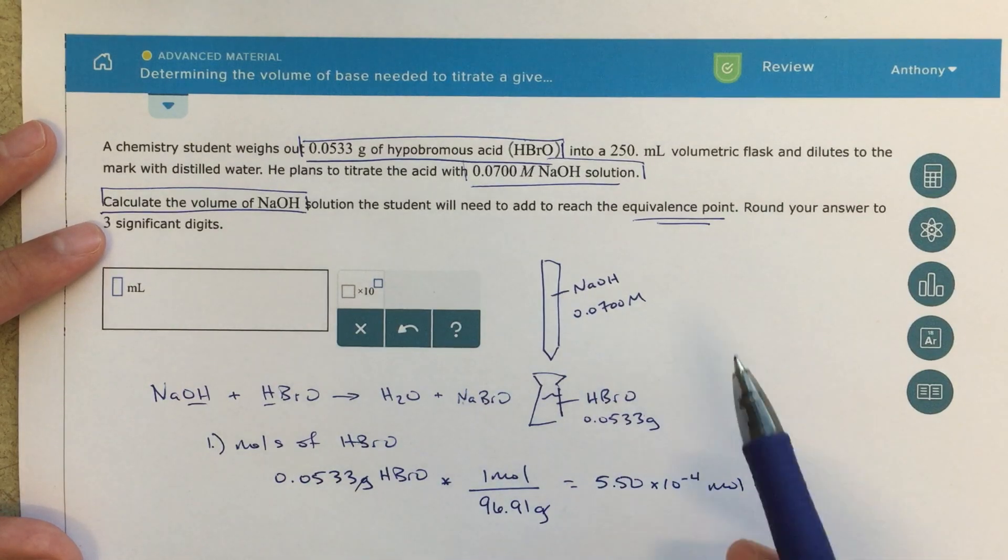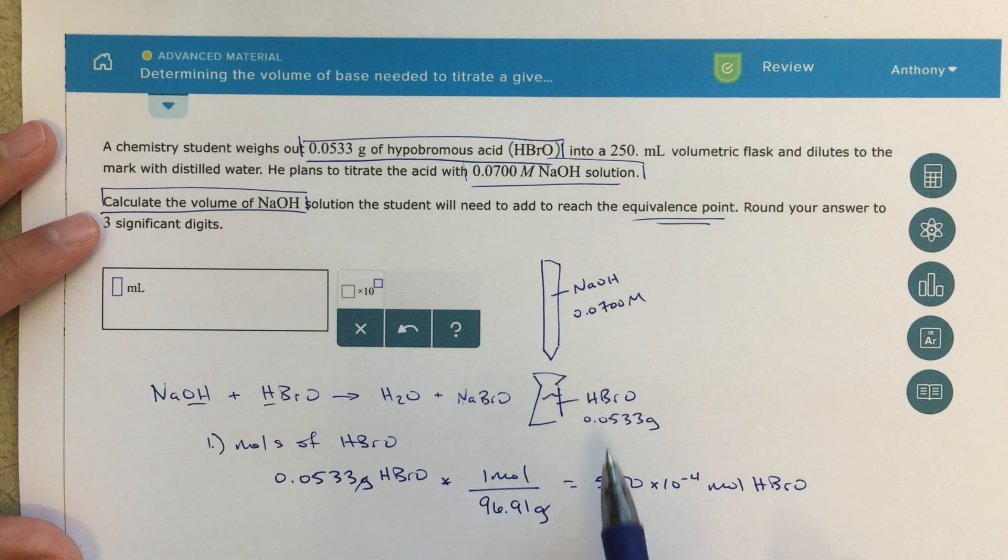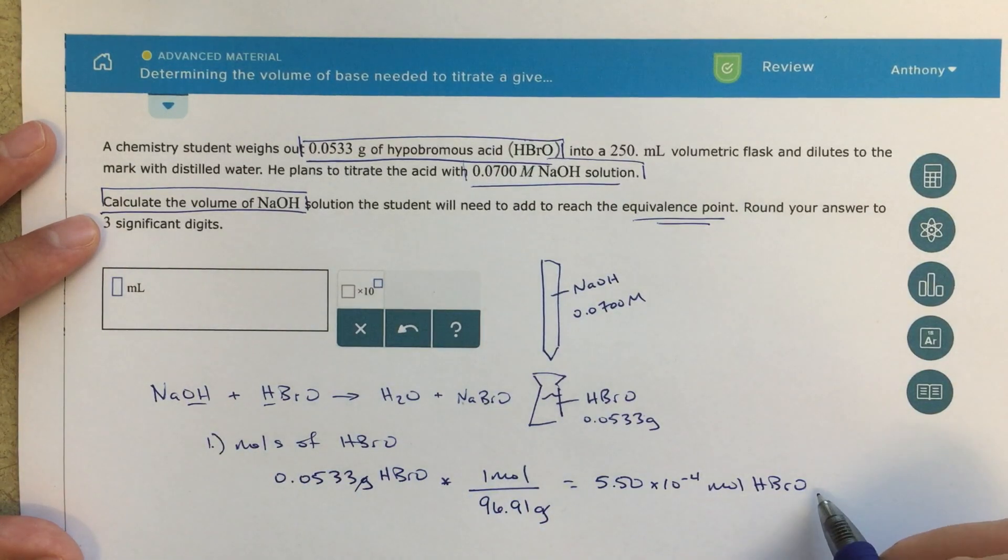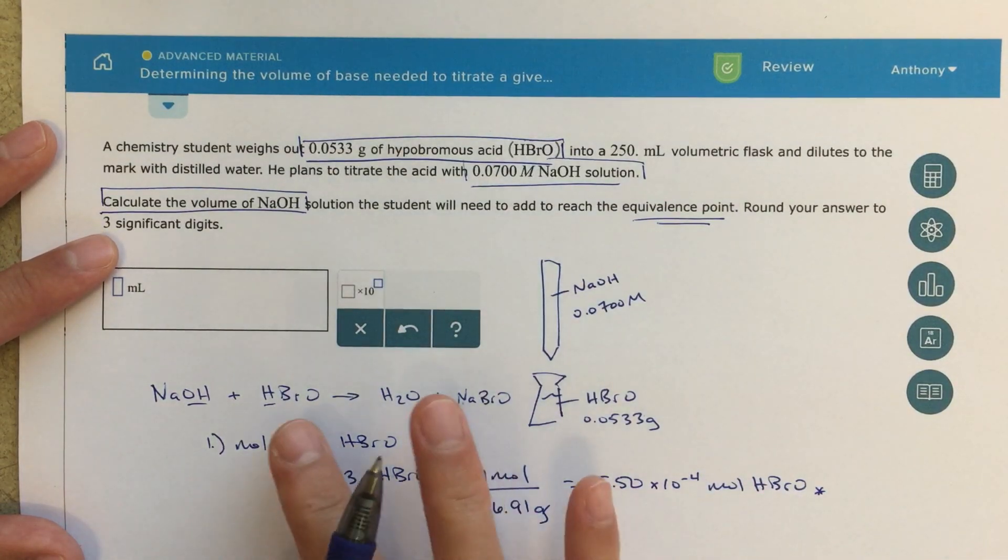Now this problem gives us this information that we're putting it in a 250 milliliter volumetric flask, but that's really irrelevant. It really does not matter how much water we put in there, because all we're really concerned about is the number of moles of HBRO that we're going to react with our number of moles of sodium hydroxide. It's a one to one, mole to mole ratio.